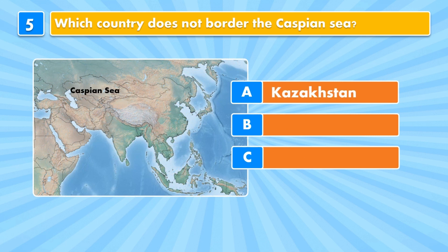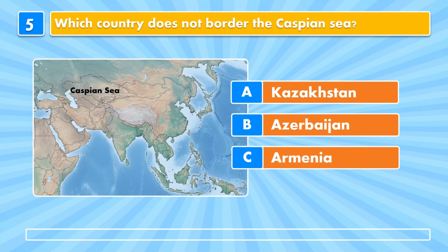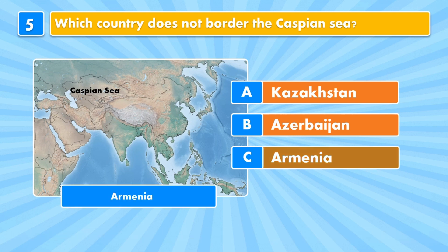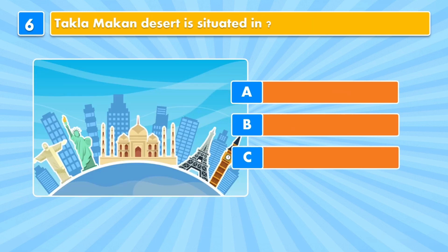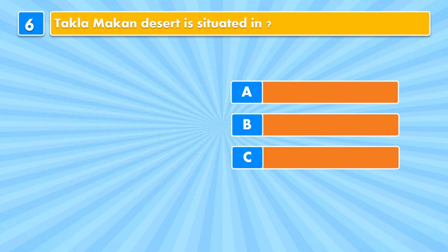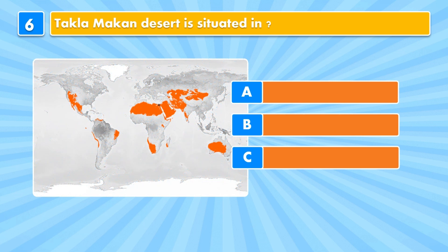Kazakhstan, Azerbaijan, Armenia? Answer is Armenia. Question six: the Takla Makan Desert is situated in China, Kazakhstan, or Uzbekistan? Answer is China.